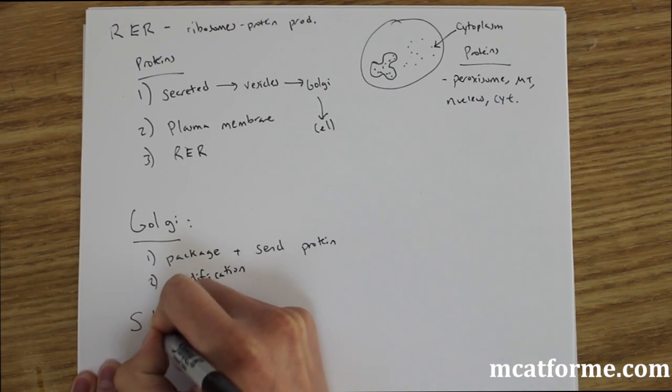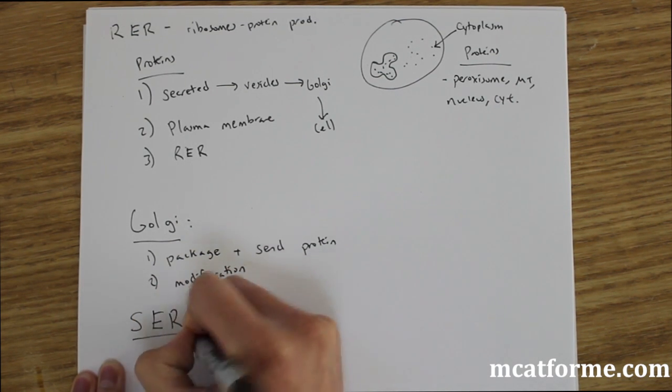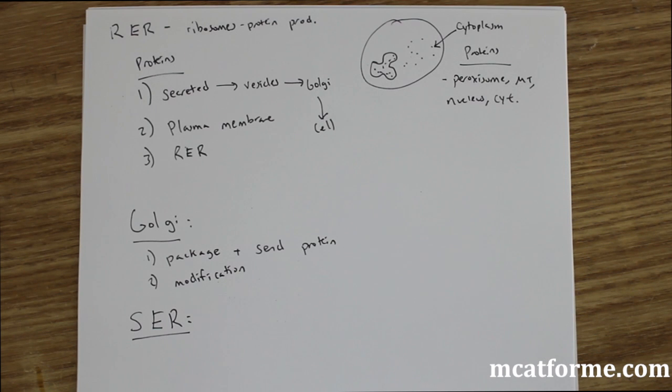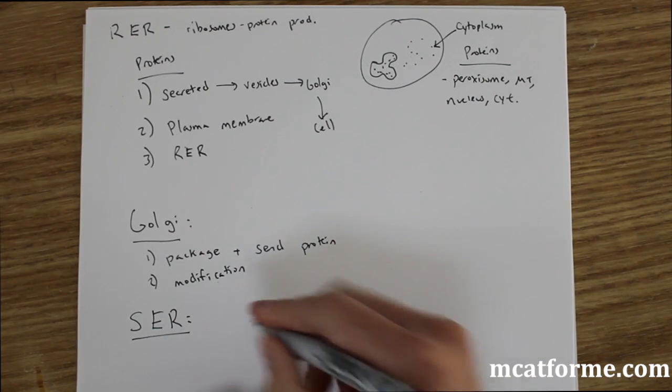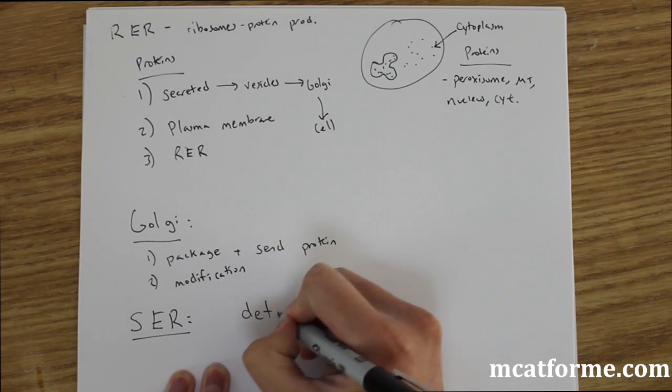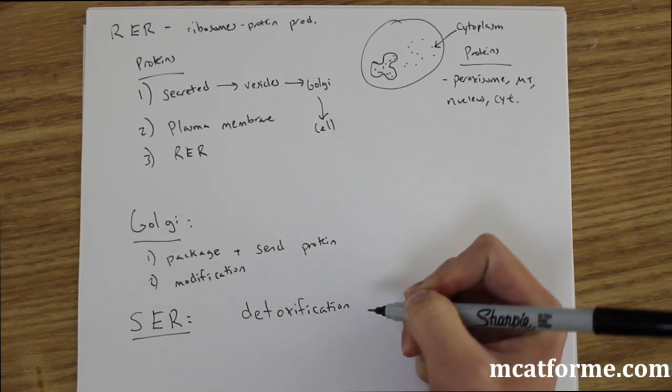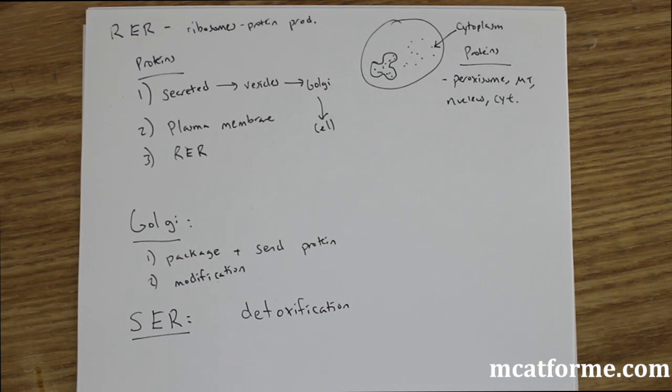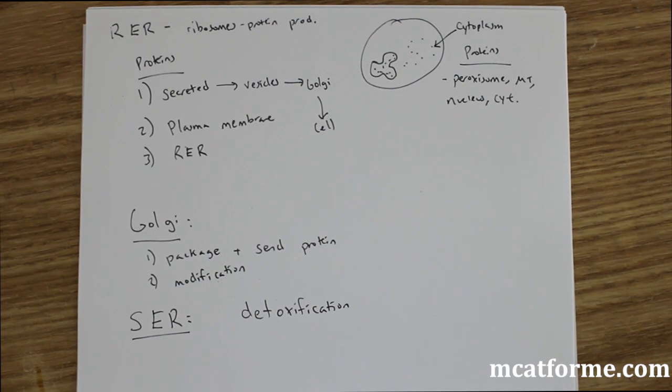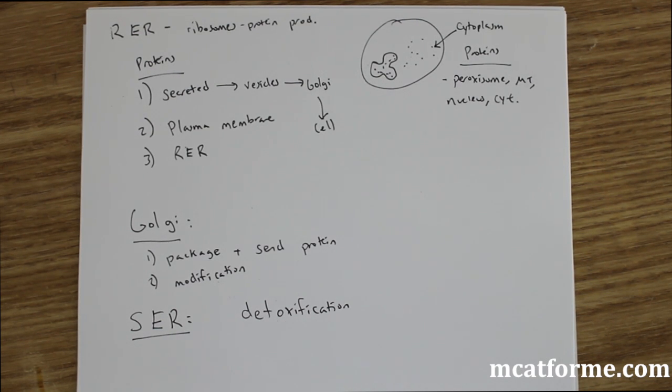The next thing we're going to be looking at is the smooth endoplasmic reticulum. This one doesn't have that much function to it that we need to know for the MCAT. But pretty much the main thing we need to know is detoxification. So detoxification occurs in the smooth endoplasmic reticulum. If you drink a lot of alcohol, your endoplasmic reticulum, the smooth part, is going to be very active.